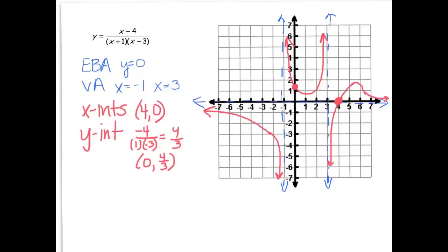So just a little recap. I found my EBA first, then I found my discontinuities, then I found my x and y intercepts. So let's try another example.